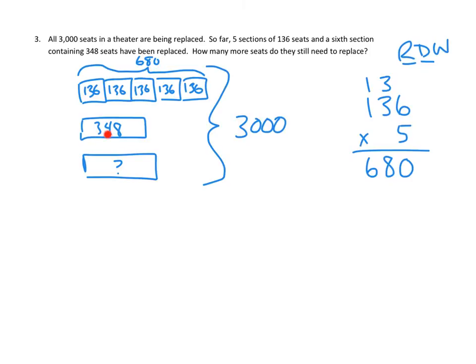That'll tell us how many seats have been replaced so far. So I'm going to do that here in the middle. 680 seats plus 348 seats will tell us how many have been replaced so far. So eight plus zero is eight. Eight plus four is 12. So that's two here and one up here. And then one plus six plus three is 10. So we have 1028 seats. That's the number of seats that have been replaced so far.